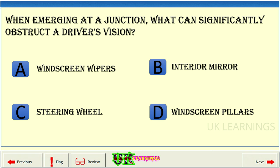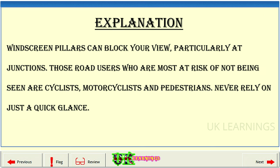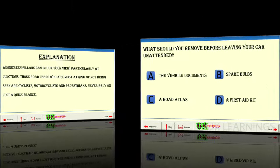When emerging at a junction, what can significantly obstruct a driver's vision? A: windscreen wipers. B: the interior mirror. C: the steering wheel. D: windscreen pillars. The correct answer is D: windscreen pillars. Explanation: Windscreen pillars can block your view particularly at junctions. Road users most at risk of not being seen are cyclists, motorcyclists and pedestrians. Never rely on just a quick glance.